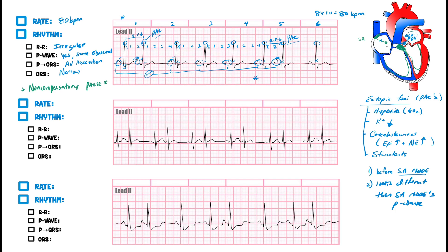PACs can generate a specific rhythm pattern. Looking at this second EKG, let's determine the rate: counting R waves — one through twelve — twelve times ten equals 120 beats per minute, so it's fast. Looking at the R-to-R intervals, there is definite variability, so this is irregular.